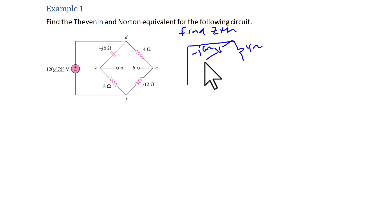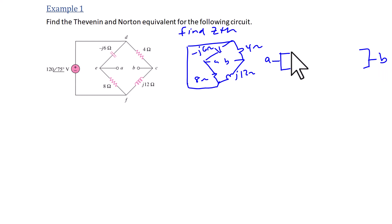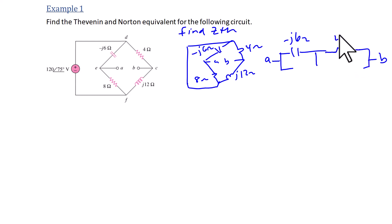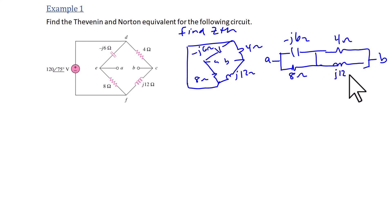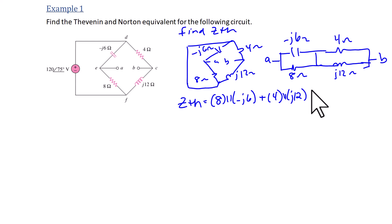We're going to have negative J6 attached to node A, 4 ohms attached to node B, the 8 ohm attached to node A, and J12 ohms attached to node B. Redrawing with node A on the left and node B on the right, negative J6 and 8 ohms are in parallel, and 4 ohms and J12 ohms are in parallel. So Z Thevenin is 8 in parallel with negative J6, in series with 4 in parallel with J12, which equals 6.48 minus J2.64 ohms.